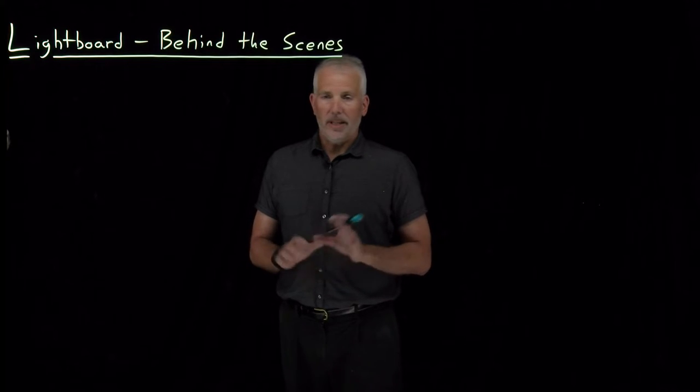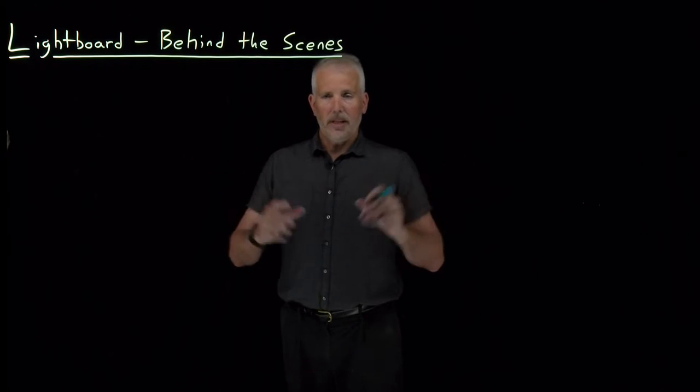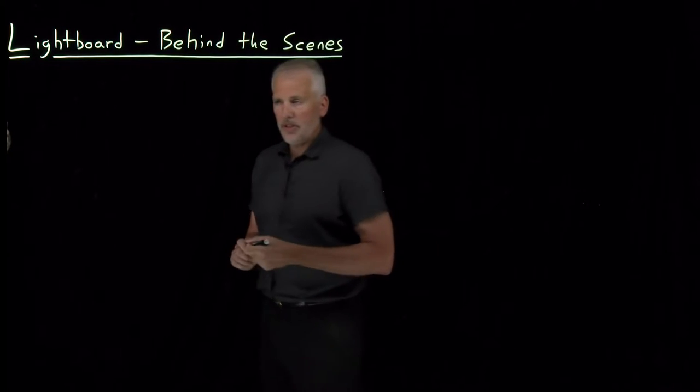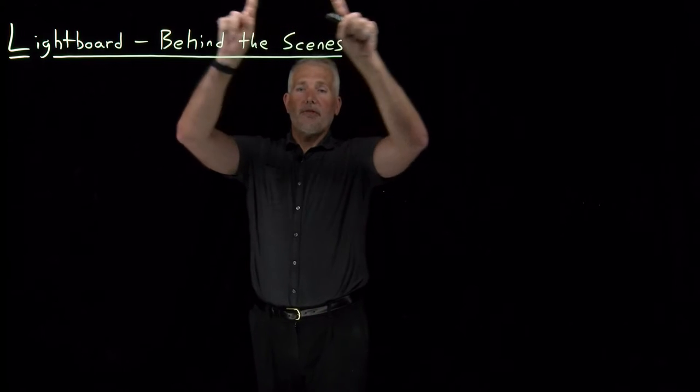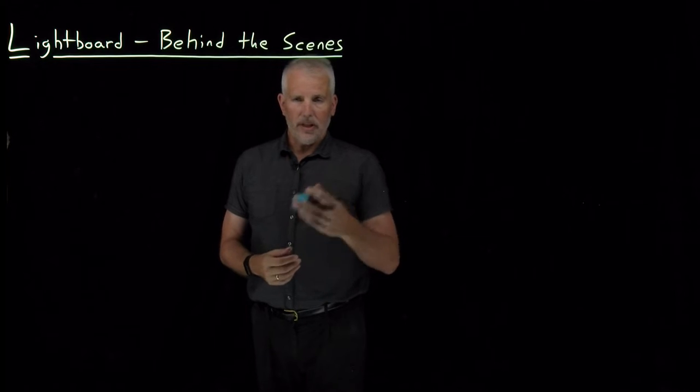So the basic idea is pretty simple, it's about like you imagine it is. There's a piece of glass in front of me that I write on, I write equations on the glass. The frame of the glass is surrounded by LED lights that illuminate this fluorescent marker so that it's bright enough to be caught well by the camera.